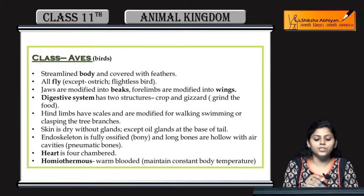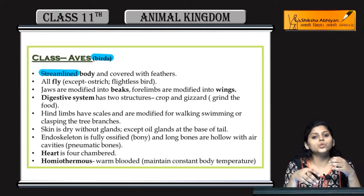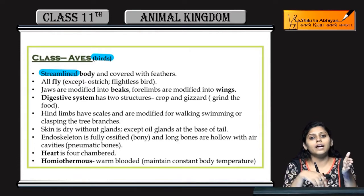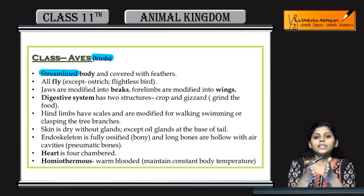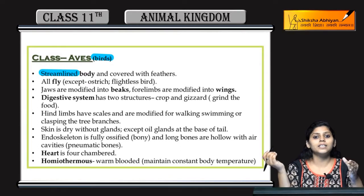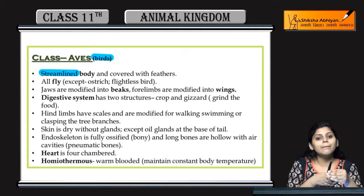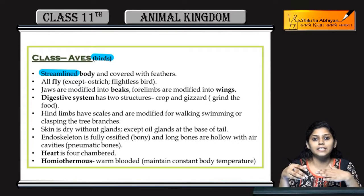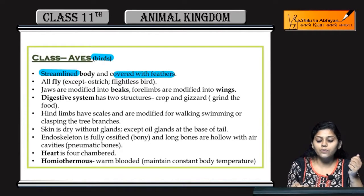Next class is Aves, jine birds bhi bolte hain. Inka ek important feature kya hai that inki body streamlined hai jo help karti hai inki flight ke liye. Agar inki body flat ho to fly karne pe age se jo air aegi woh backward force lagayegi. But agar inki body streamlined ho to air inki body ke side se pass kar jayegi, to ye asani se fly kar sakti hai. Isililye inki body streamlined hoti hai, which is covered with feathers.